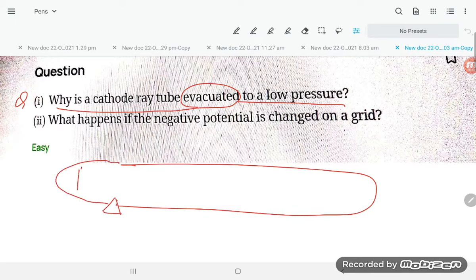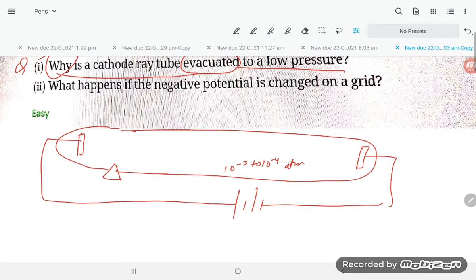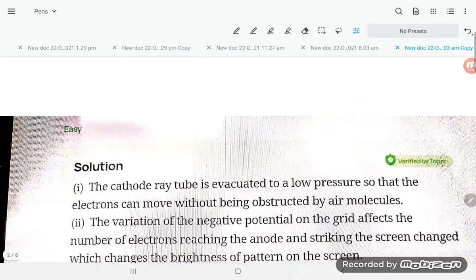They are saying, why is it evacuated? Why is the gas removed here, or present at low pressure of 10 power minus 3 to 10 power minus 4 atm? What is the reason? Let's have a look at the reason, students.